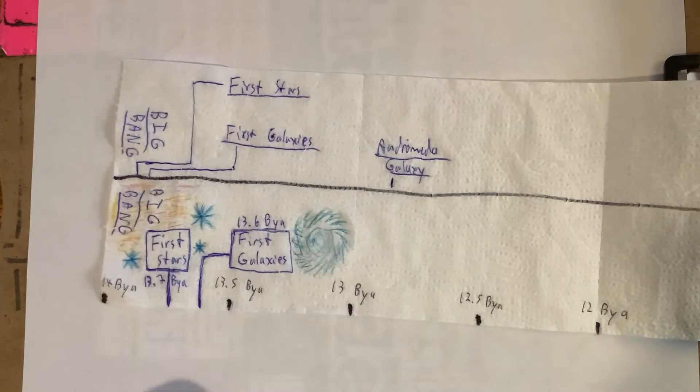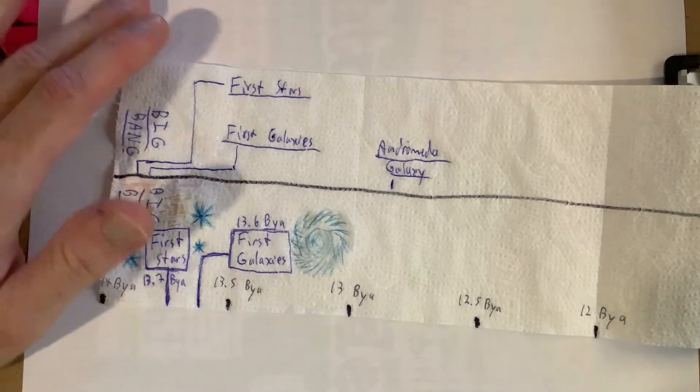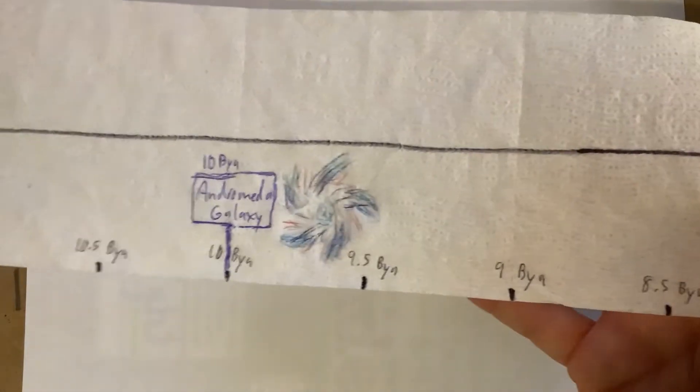Turns out first stars and first galaxies were a little bit sooner in our history: 13.7 and 13.6 billion years ago. The Andromeda galaxy actually didn't show up until 10 billion years ago. I didn't know about that.